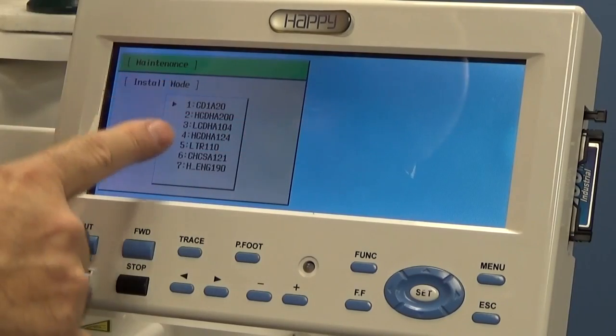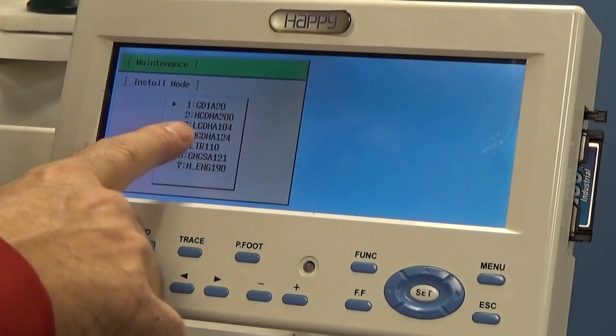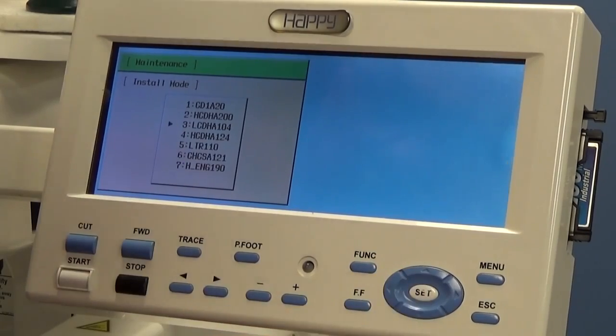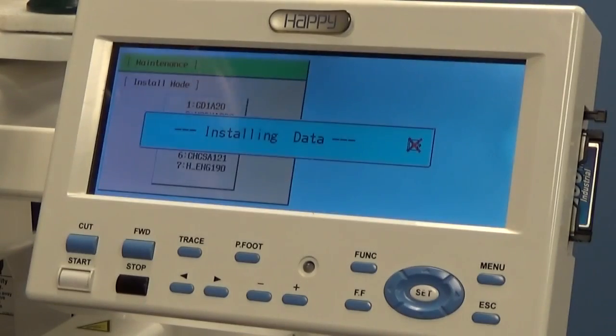This time, in the file list, we're going to look for LCDHA104. We're going to go down to that. Press set. It's going to say installing data.